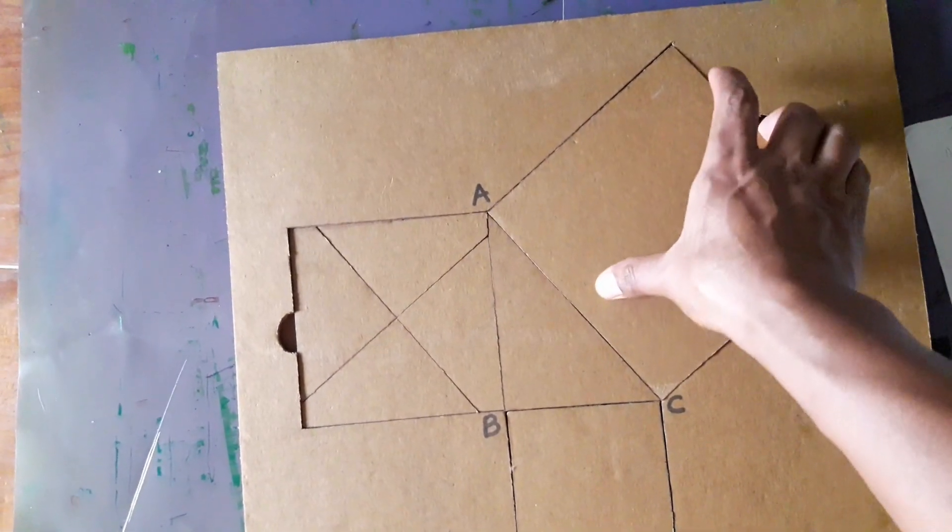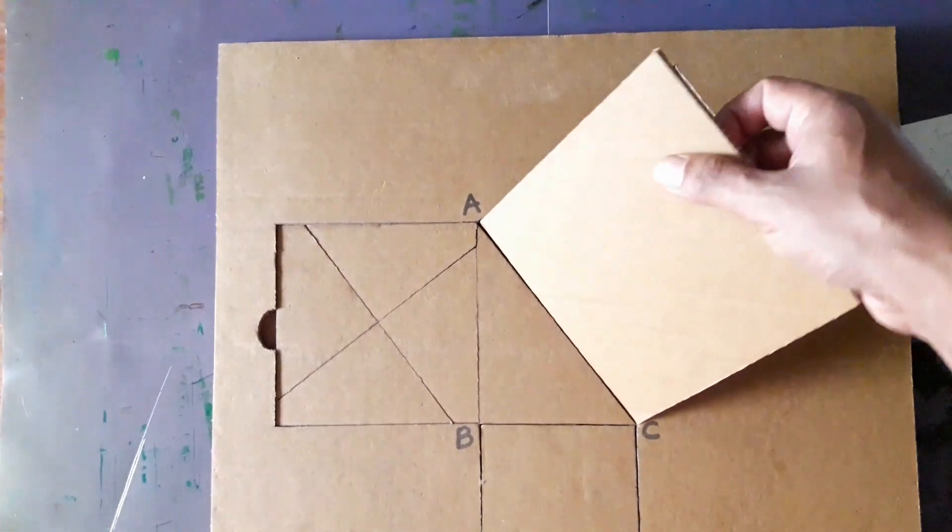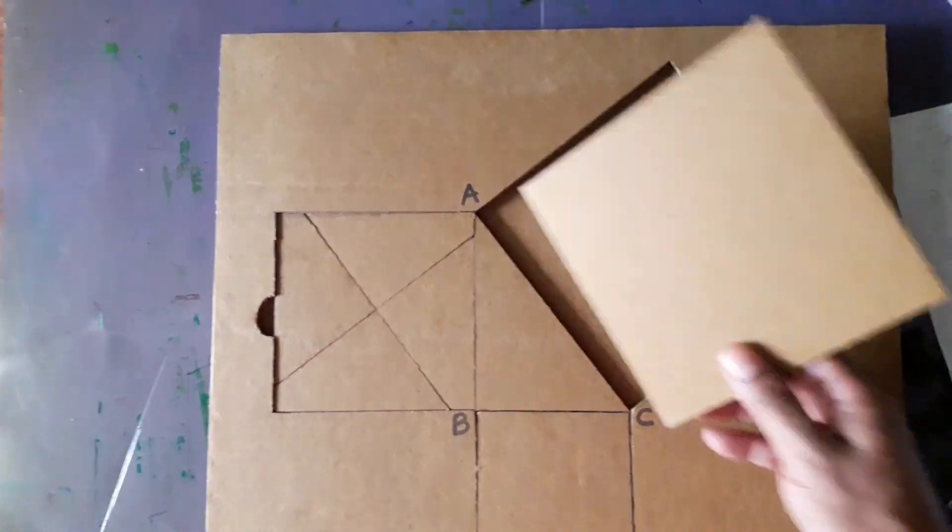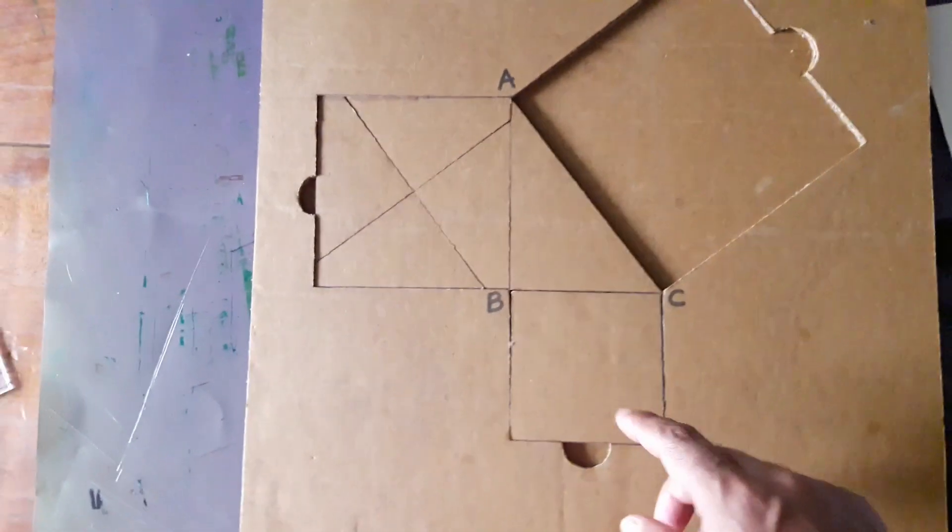Students can be asked to remove the square described on AC. They have to fit the other two squares into that space.